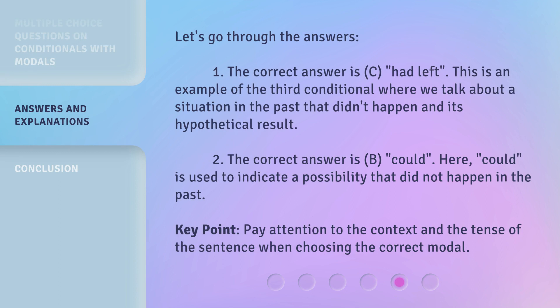Let's go through the answers. Question 1: The correct answer is C — 'Had left.' This is an example of the third conditional, where we talk about a situation in the past that didn't happen and its hypothetical result. Question 2: The correct answer is B — 'Could.' Here, 'could' is used to indicate a possibility that did not happen in the past. Key point: pay attention to the context and the tense of the sentence when choosing the correct modal.